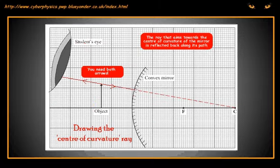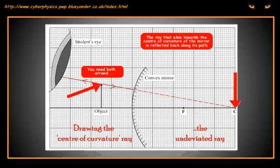First, we will draw the center of curvature ray, the one that is undeviated. Position your ruler so that it is on the center of curvature point and the tip of the object. Draw a solid line from the mirror to the eye and a dashed construction line from the center of curvature to the mirror.